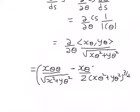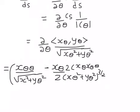Differentiating within the square root gives 2·x_θ·x_θθ, and similarly 2·y_θ·y_θθ. This completes the i component of the derivative, and there is also a j component which is analogous.